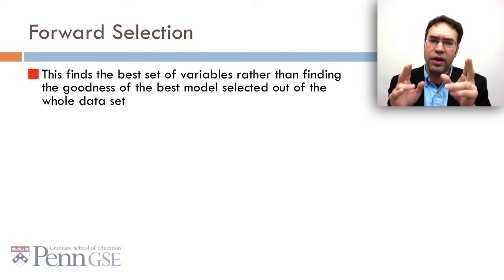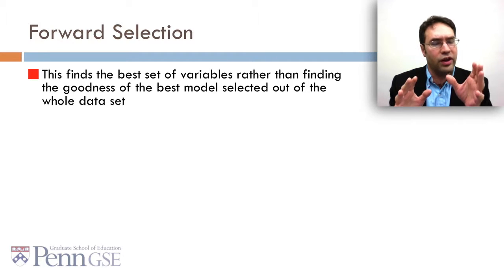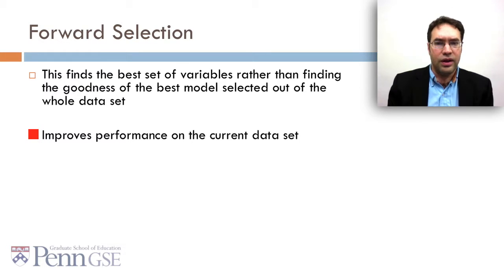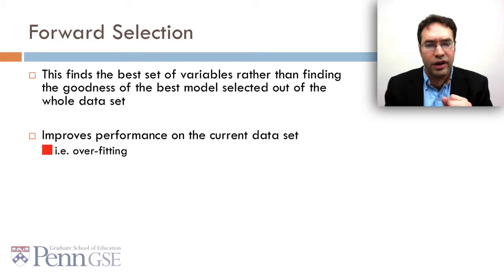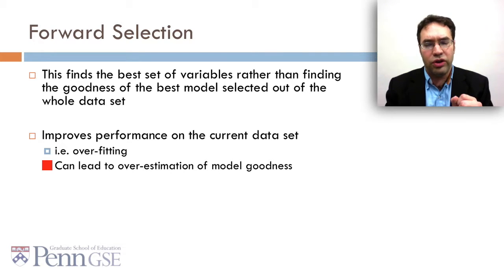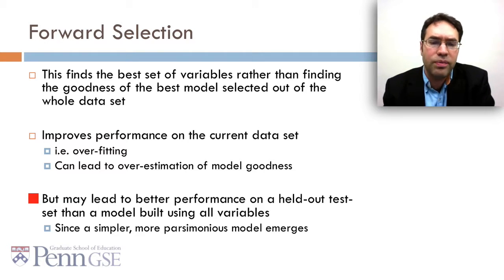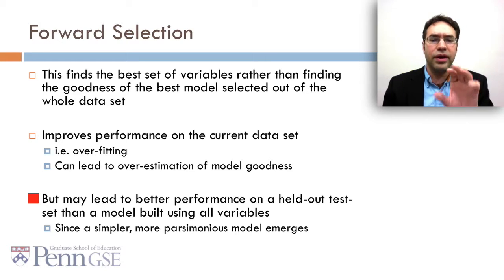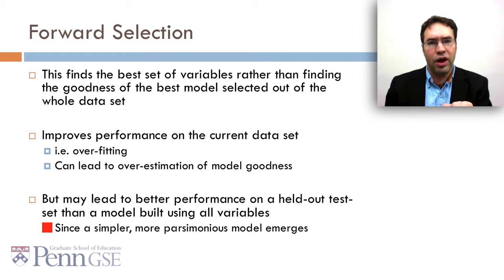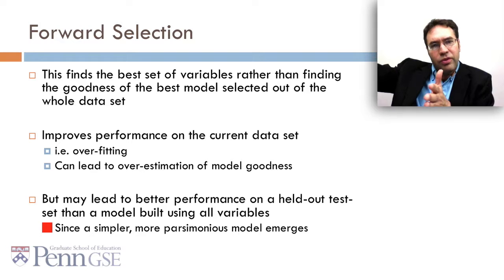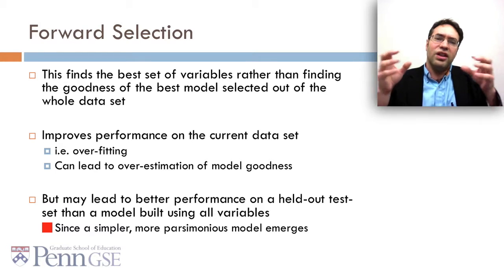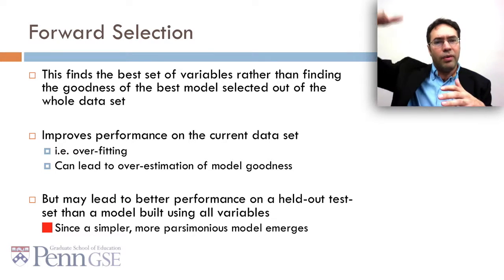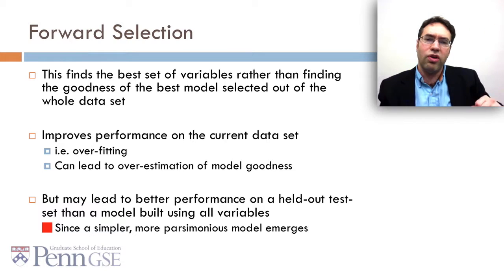This approach finds the best set of variables rather than finding the goodness of the best model selected out of the whole dataset. It improves performance on the current dataset, it's almost guaranteed to do that, i.e. it's overfitting. It can lead to overestimation of model goodness. But you still may want to do it because it may lead to better performance on a held-out test set than a model built using all variables. And that's because by definition it's also going to produce a simpler, more parsimonious model. So even though it's improving performance on the current dataset, it's also becoming more parsimonious. You put those together and it's not clear which one's going to win out. They may cancel each other out. You may end up with a better model on new test data, you may end up with a worse one. It's worth trying and seeing how it does.